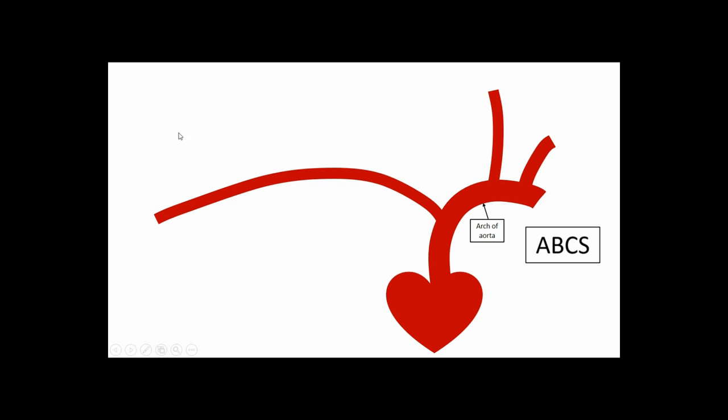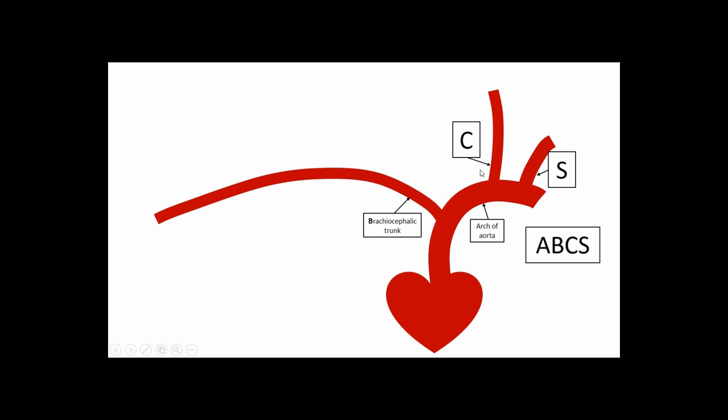Going from left to right as you look at the patient — remember the right side of the patient is on your left — we have sidedness in our branching patterns. ABCs: A for arch of the aorta, B for brachiocephalic trunk, C for the left common carotid artery, and S for the left subclavian artery. I'm right-handed, so I stick out my right hand in anatomical position and visualize these blood vessels in their pathways.